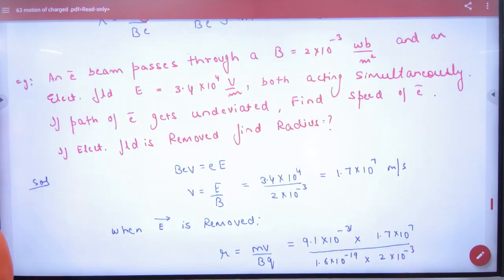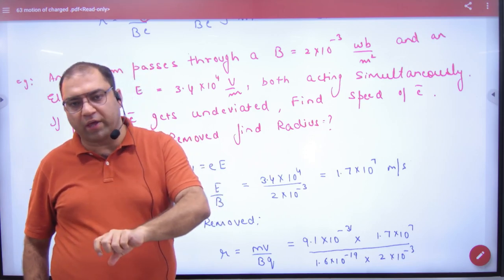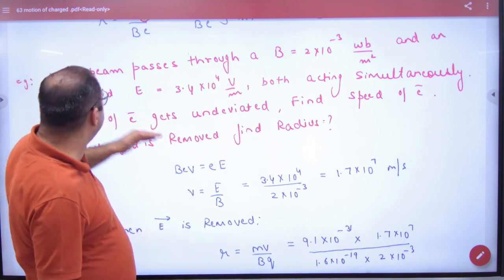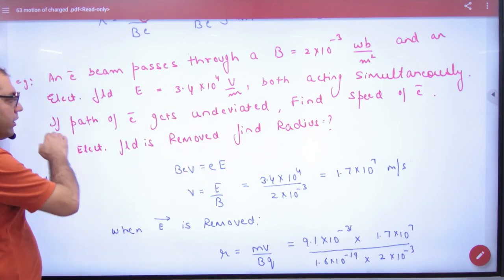Look at this, this question is very famous. So in question, electron beam passes through V. Magnetic field unit is like Tesla. What is WB? Weber. Weber per meter square. This is also Tesla equivalent. If weber per meter square or Tesla, this is one thing. Capital E is given, electric field is given, B is given. Both simultaneously act. Electron is undeviated.